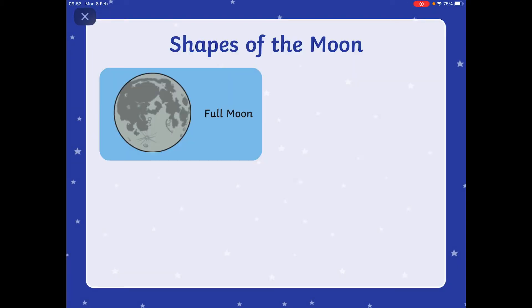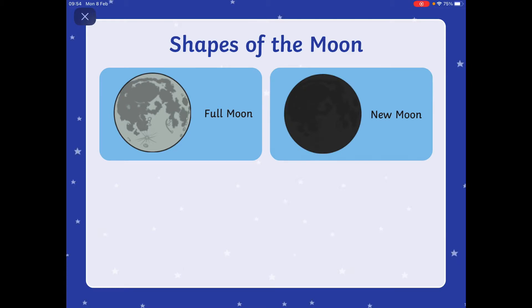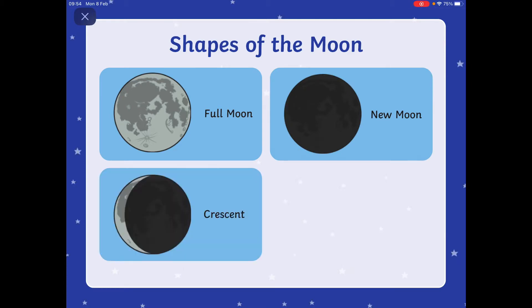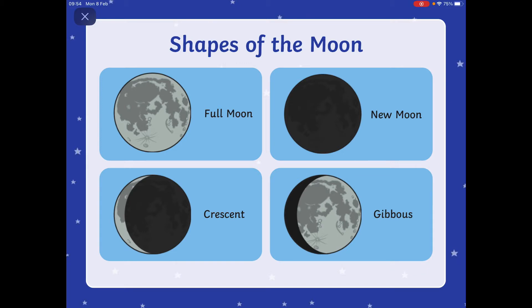There are different shapes of the moon. Some of these you'll know. So we've got full moon, a new moon, a crescent, and a gibbous.